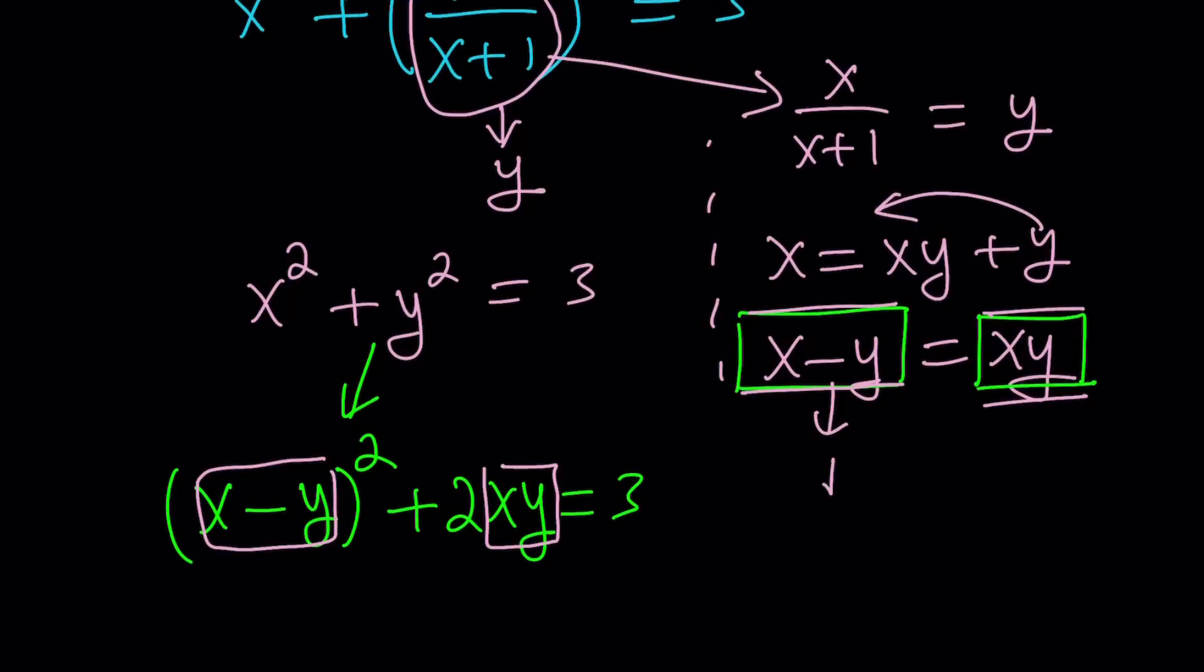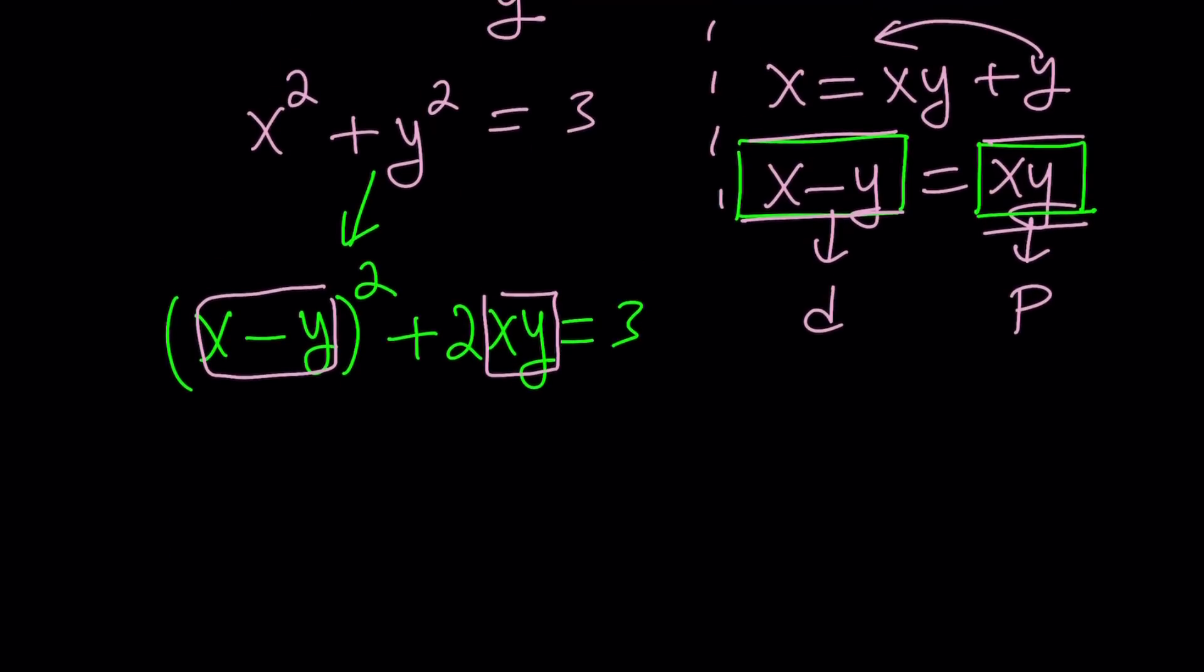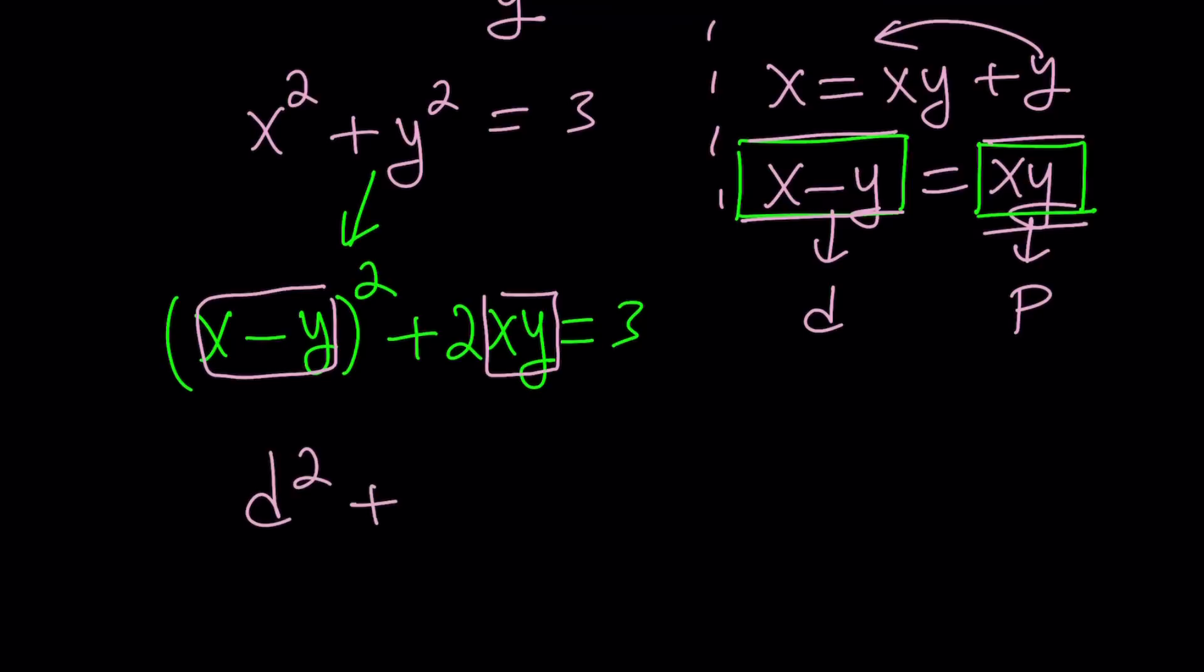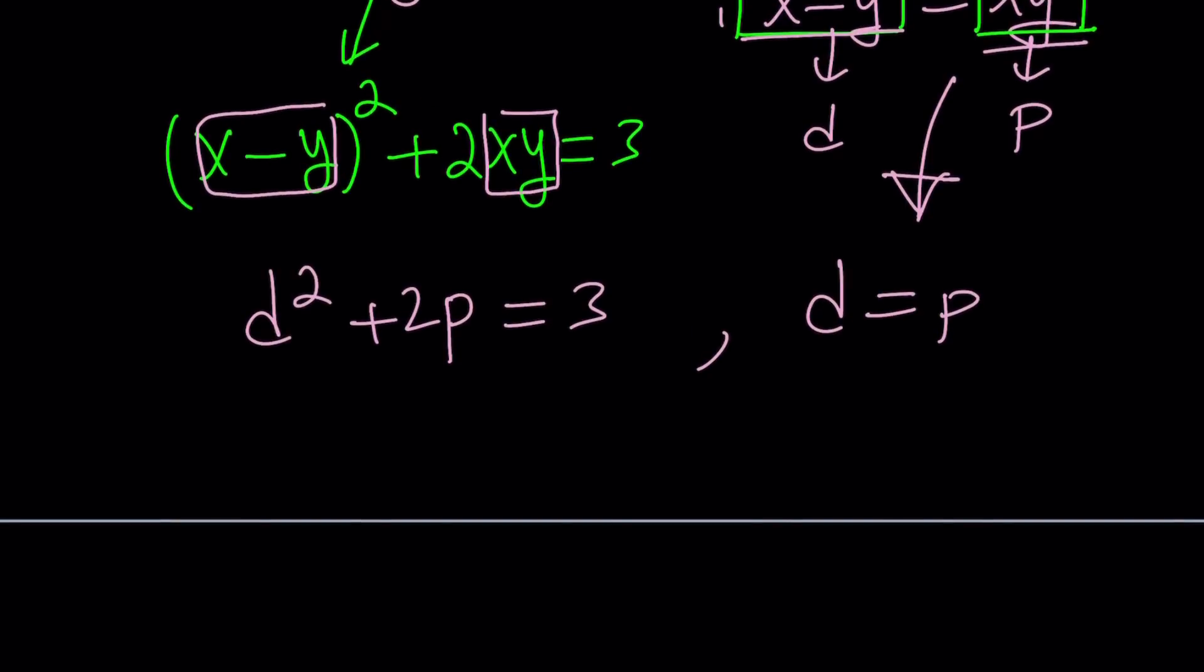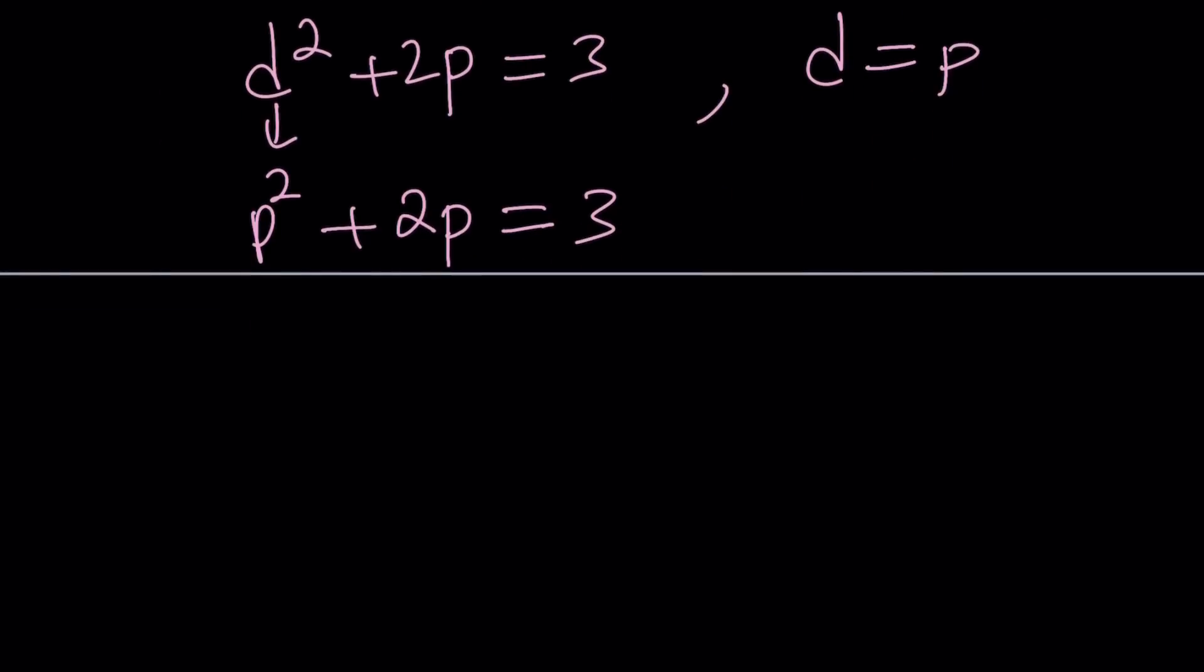So now here's what we're going to do. Let's call this d for difference and let's call this p for product. So now we got d squared plus 2p. I'm not going to say 2b or not 2b. It equals 3 and d equals p. Look at that, isn't that powerful? It is. So now we can replace d with p and that's going to give us p squared plus 2p equals 3.